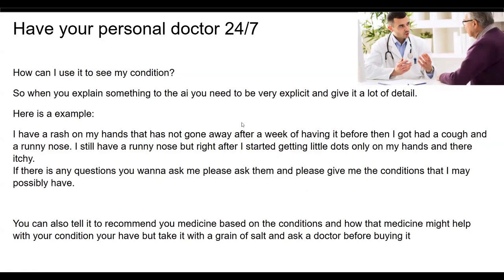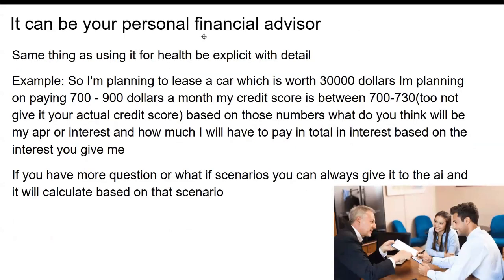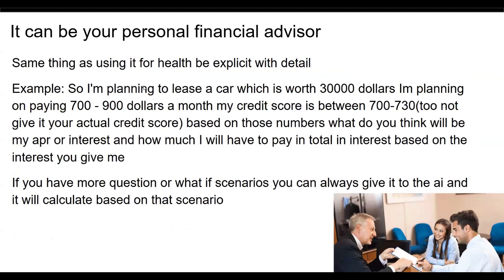It can be your personal financial advisor — same idea, be explicit with detail. For example: 'I'm planning to lease a car worth $30,000. I'm planning on paying $700–$900 per month. My credit score is between 700 and 730.' Do not give it your actual credit score. Ask: 'Based on those numbers, what will be my best interest rate and how much will I have to pay in total interest?' If you have more questions or scenarios, give them to the AI and it will calculate based on that.